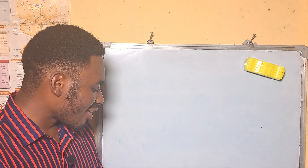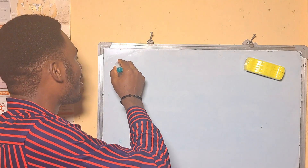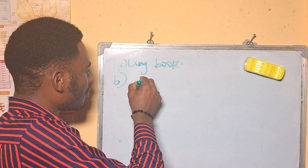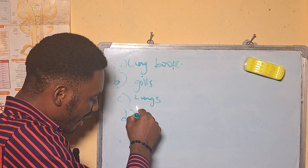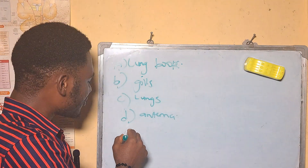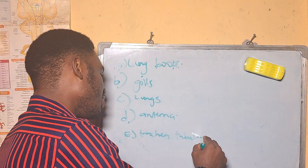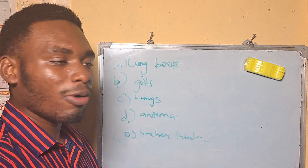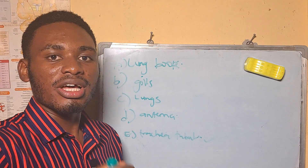A grasshopper respires by means of — A: lung books, B: gills, C: lungs, D: antennae, E: trachea tubes. The answer is E, trachea tubes. As mentioned in the tutorial, grasshoppers are insects and insects use the trachea system for respiration.